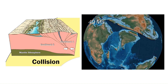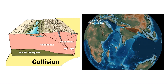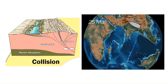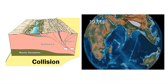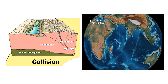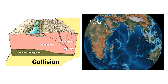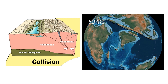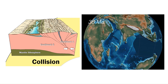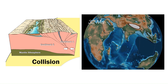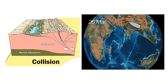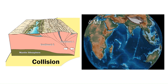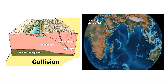The final stage of the Wilson Cycle occurs when the continents finally collide to form a large mountain range. A good example of this is the modern Himalayas, where the Indian plate continues to collide with the Eurasian plate, closing an ancient ocean basin known as the Tethys Ocean. The animation on the right shows this collision.